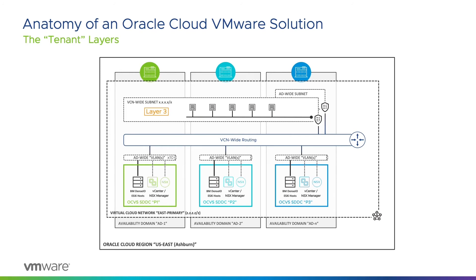Oracle Cloud allows the deployment of a number of external connectivity options into a VCN, without which there is no external access. For example, the Internet Gateway allows inbound and outbound access for devices with a dedicated public IP address, and the NAT Gateway offers outbound internet access to devices without. In order to access these and other gateways, entries are needed in the VCN routing table before the resources can use them.